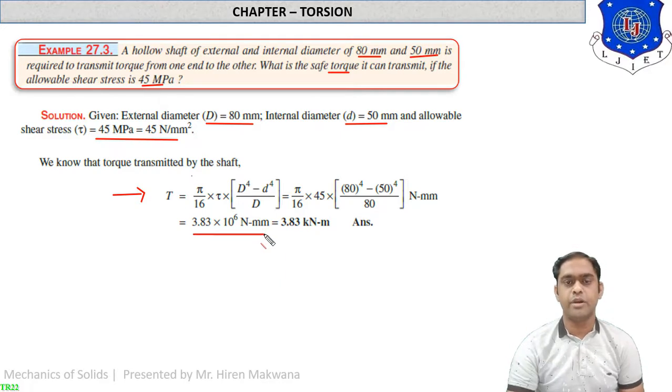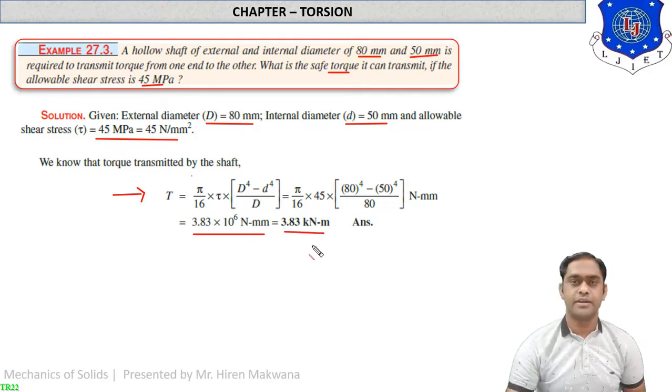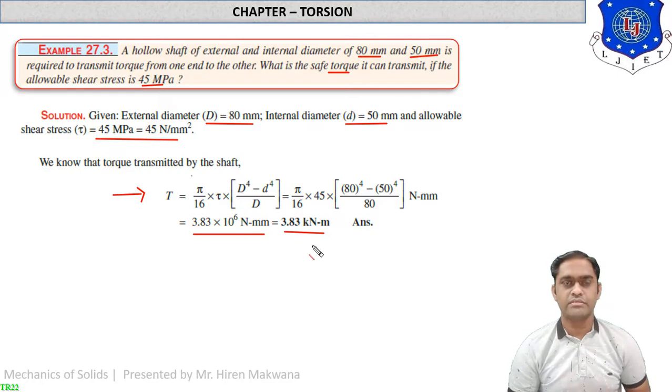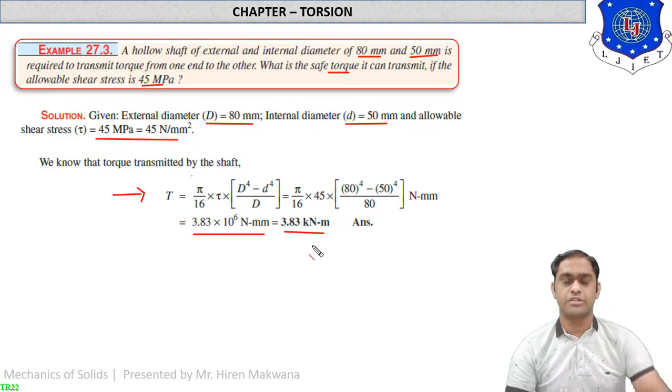You get the answer as 3.83 × 10⁶ N·mm, i.e., 3.83 kN·m. This is a simple numerical for the hollow shaft.